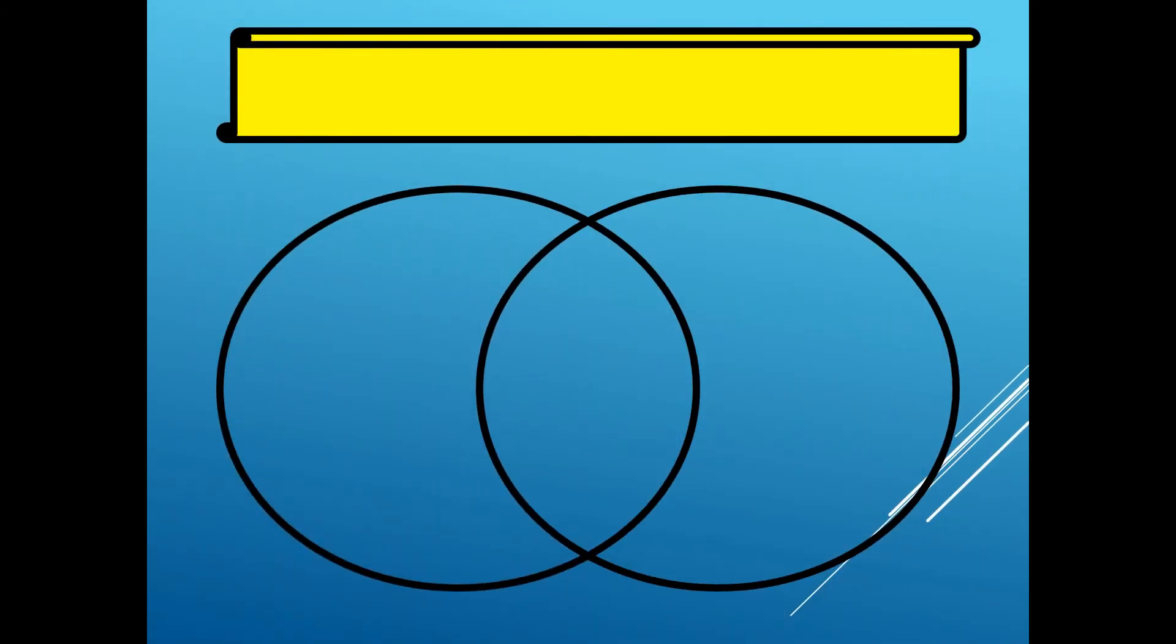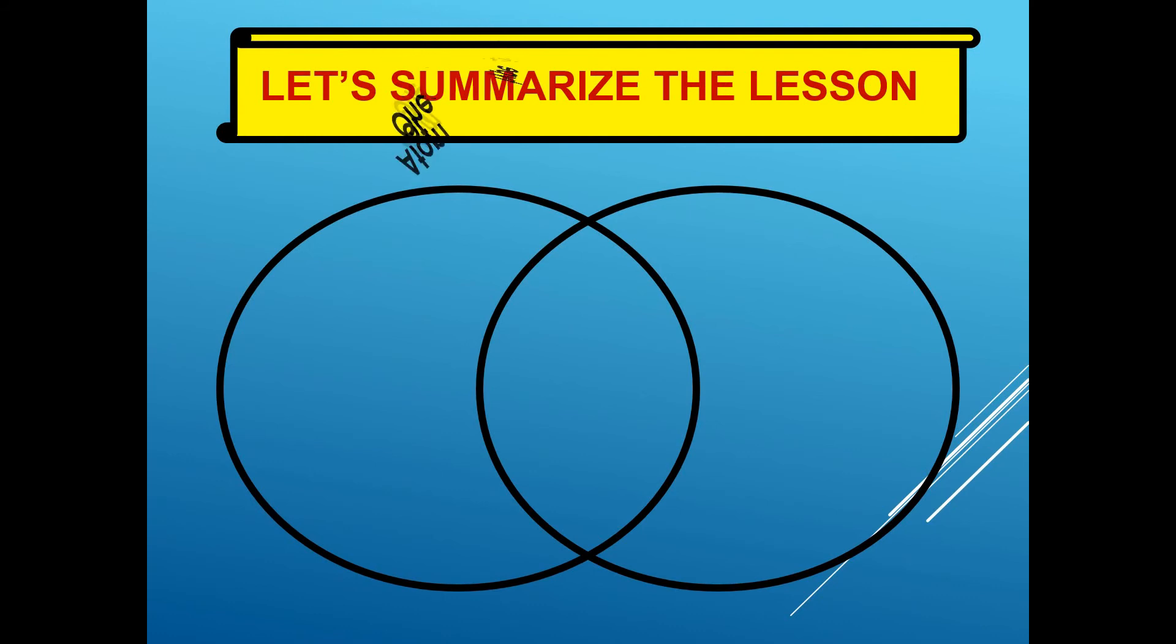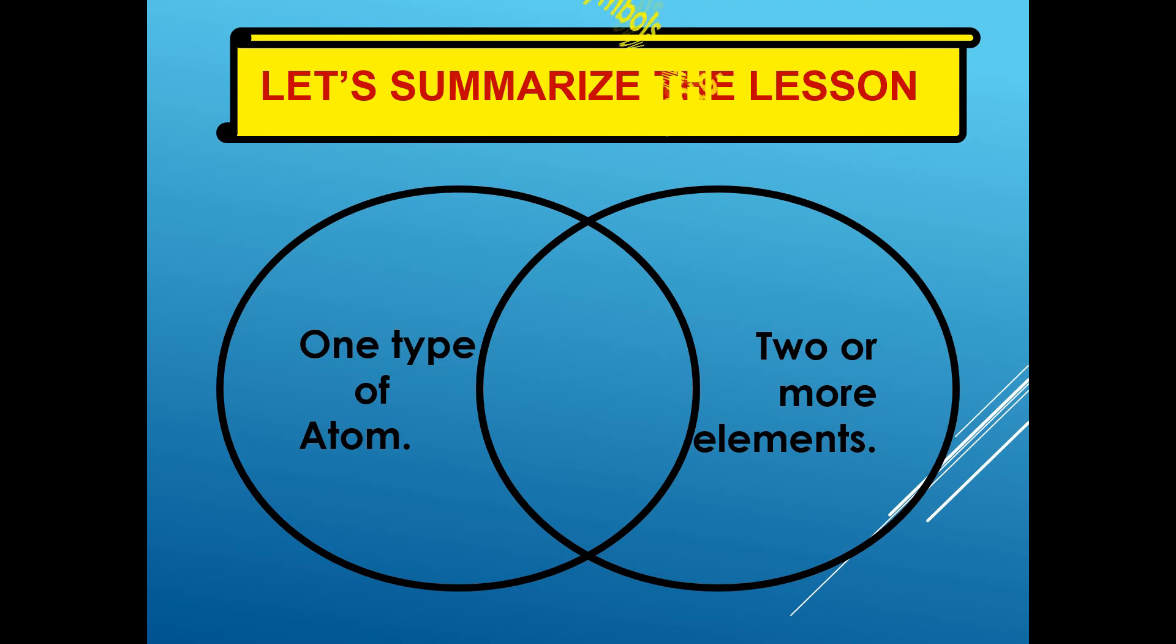Let's summarize the lesson using a Venn diagram. For element, it is made up of one type of atom. For compound, it is made up of two or more elements. And they are both represented by symbols.